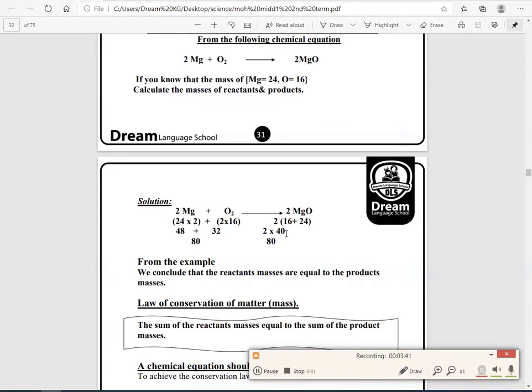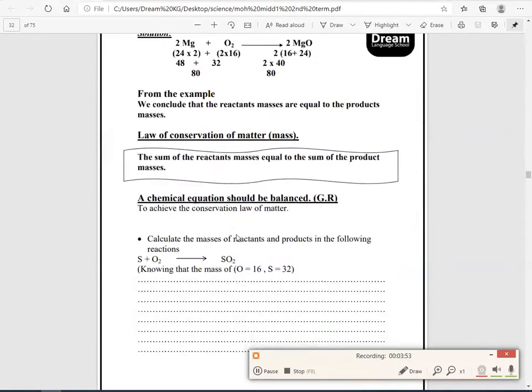From this example, we can conclude that the reactant masses are equal to the product masses, so it is the law of conservation of matter or masses, which says that the sum of the reactant masses equal to the sum of product masses.